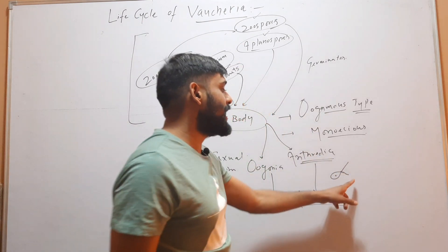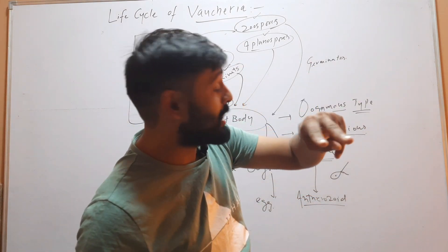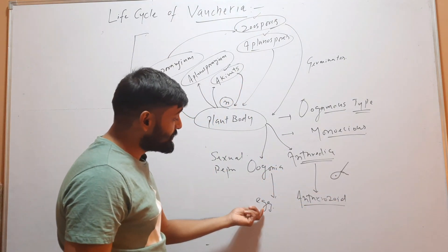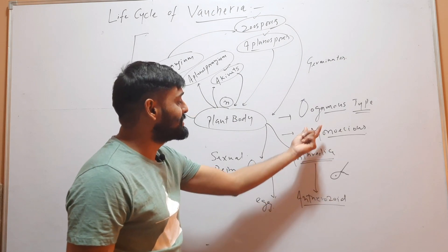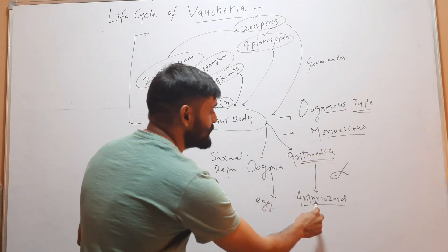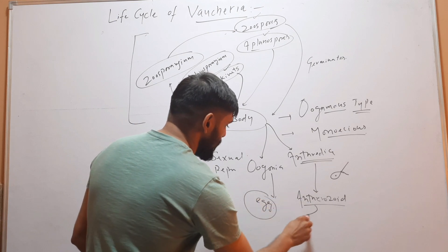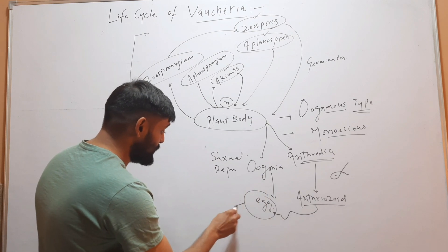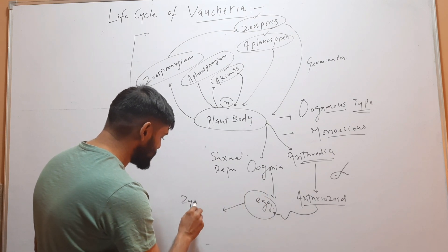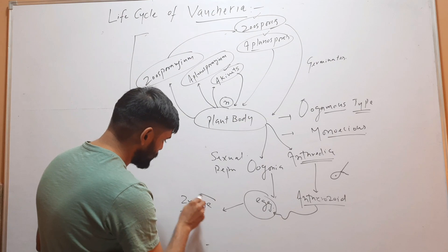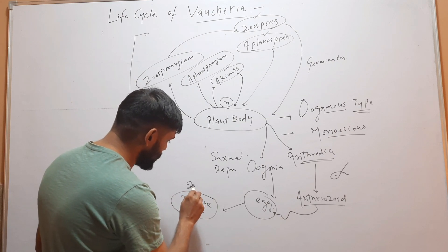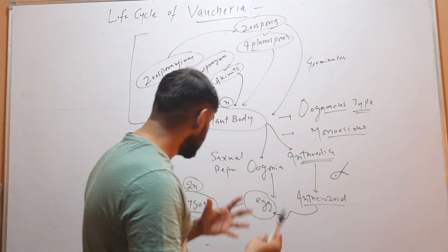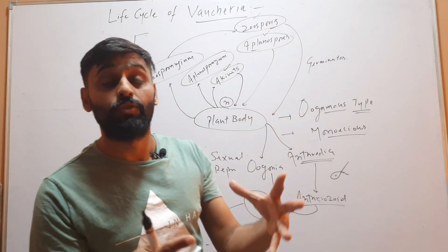The antheridium produces male gametes called antherozoids. These antherozoids are biflagellated with unequal flagella — there are two flagella, one smaller and one larger in size. On maturation, these antherozoids are released from the antheridium; they swim and reach the egg present in the oogonium, resulting in zygote formation.